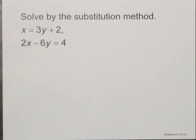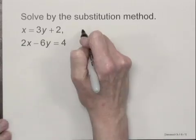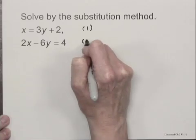Solve by the substitution method. We have the system of equations x equals 3y plus 2 and 2x minus 6y equals 4. Let's call this equation 1 and this equation 2.